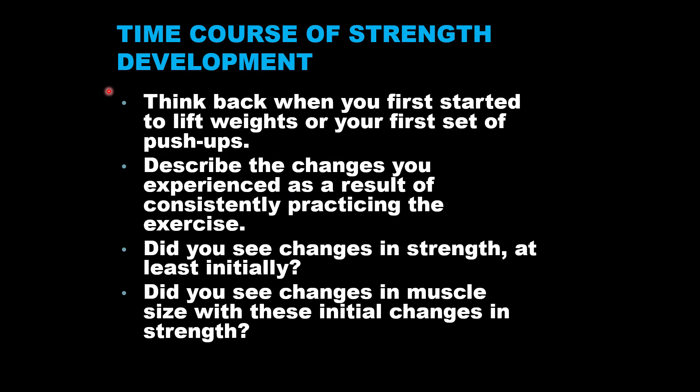We've covered the neural adaptations to resistance training as well as the muscular adaptations, and both contribute to the overarching adaptation of neuromuscular strength development. Let's talk about the time courses for each. Think back to when you first started lifting weights. In response to a new resistance exercise stressor, the initial improvements in strength are mainly attributed to neural adaptations with only minor contributions from muscular adaptations. This doesn't mean muscular adaptations are not occurring in this initial phase.